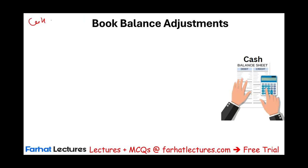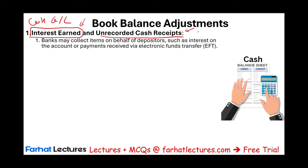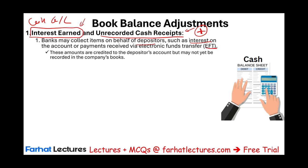On the book side — the cash general ledger — we must look at the bank statement for any interest earned or unrecorded cash receipts. If the bank earned interest on your account or collected money on your behalf (such as an EFT payment from a customer you weren't yet aware of), you add those amounts to your book balance. For example, if you see an EFT of $200 on your bank statement not recorded in your ledger, you add $200. If the bank credited $10 of interest not on your books, you add that too.